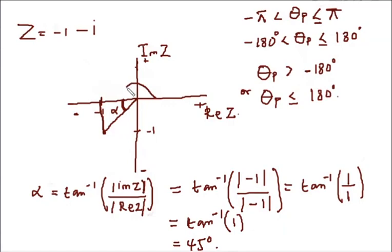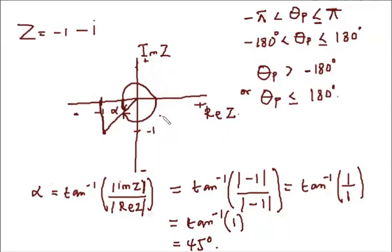We can measure theta_p starting from one side to the complex number, or from the other side to the complex number. The first tip is: to measure theta_p, you pick the option that is closer. For this case, you pick this option because it is closer. If you are measuring towards this side, any angle you measure is in the negatives, and if you are measuring towards this part, any angle is in the positive.